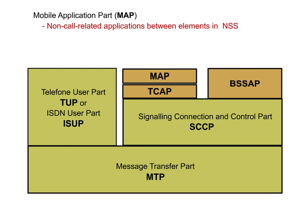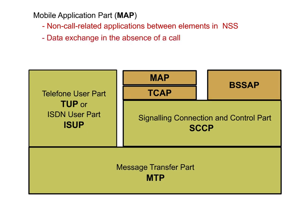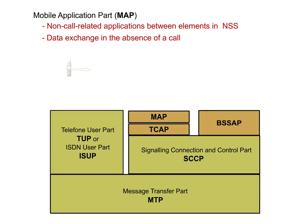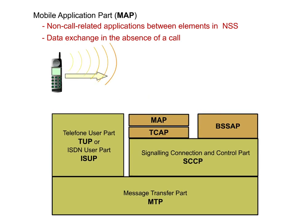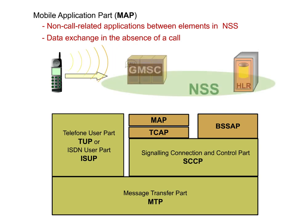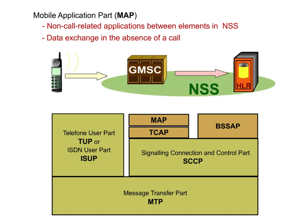A MAP-based communication takes place when data is exchanged between NSS elements in the absence of a call. This is the case, for example, with normal call setup. To put a call through to the subscriber, the gateway MSC must request necessary routing data from the HLR.